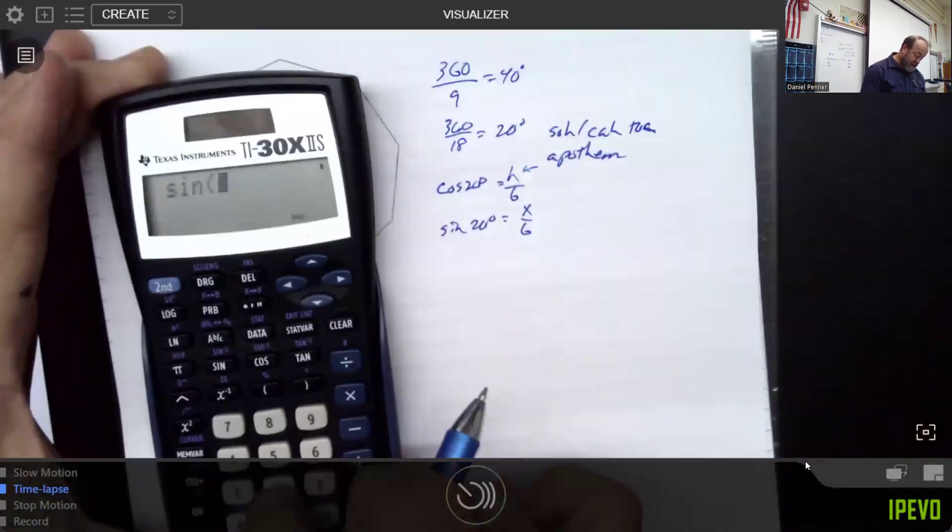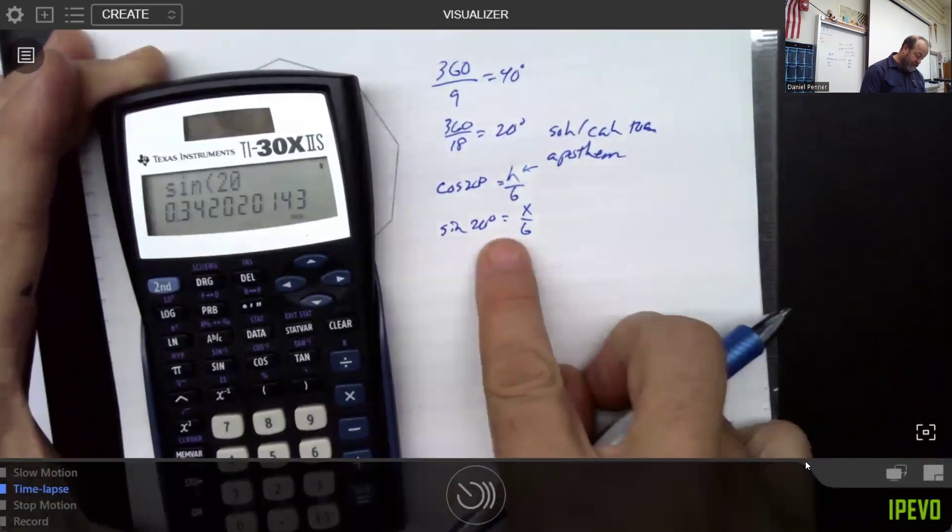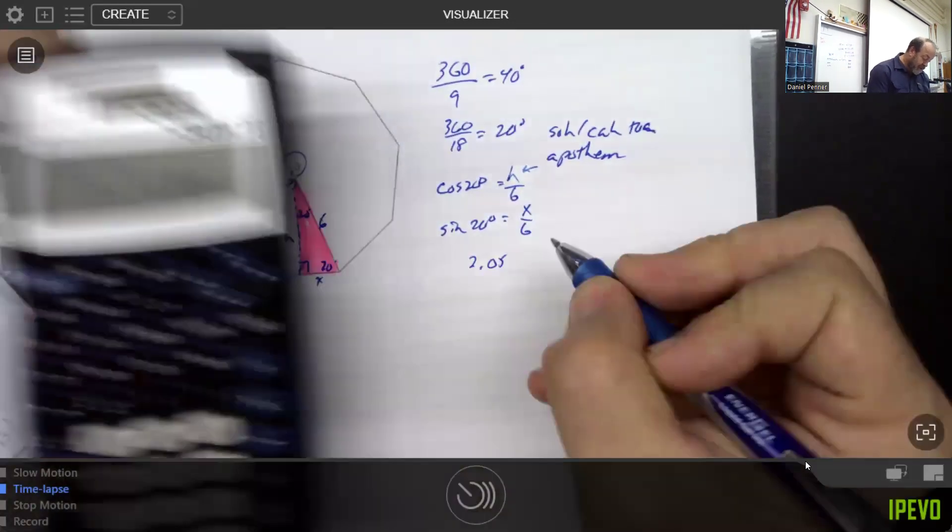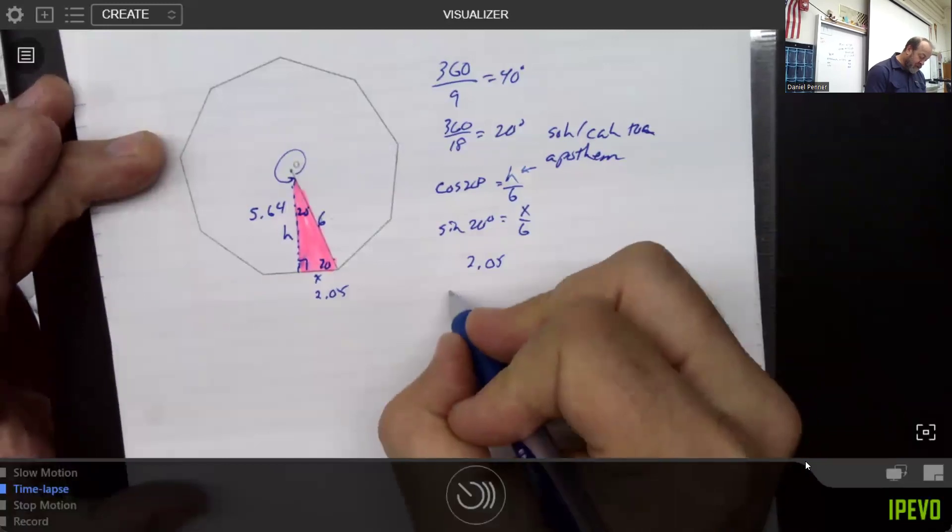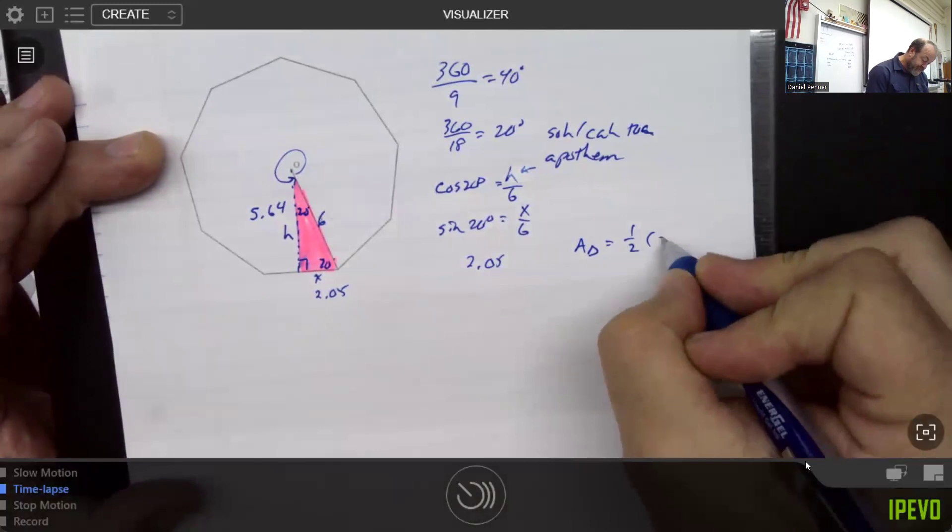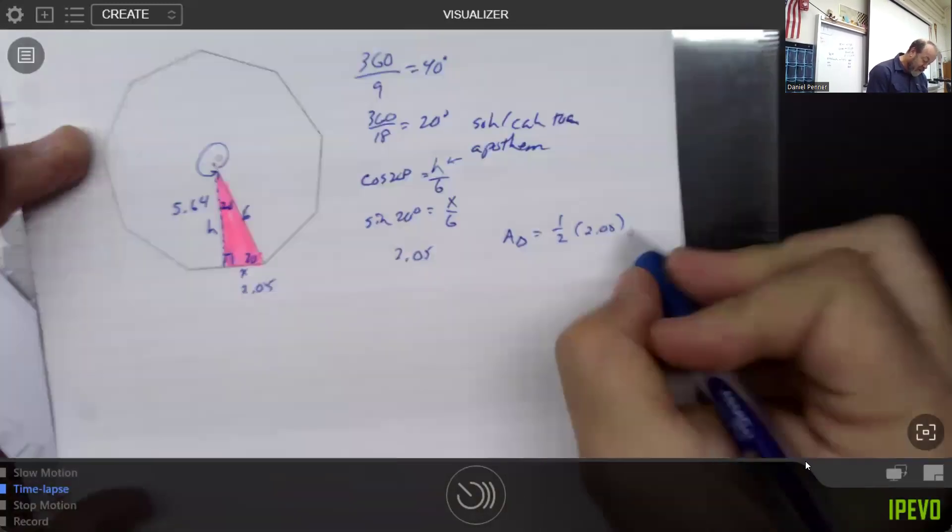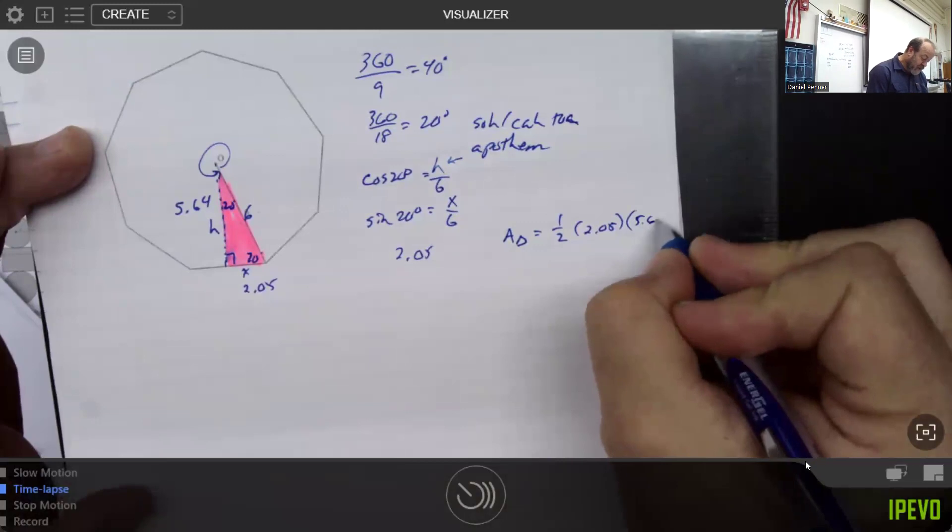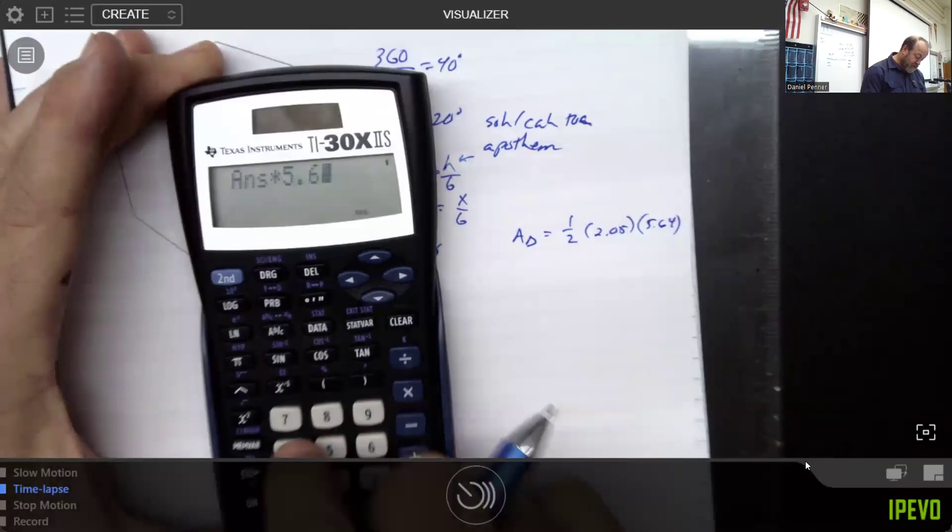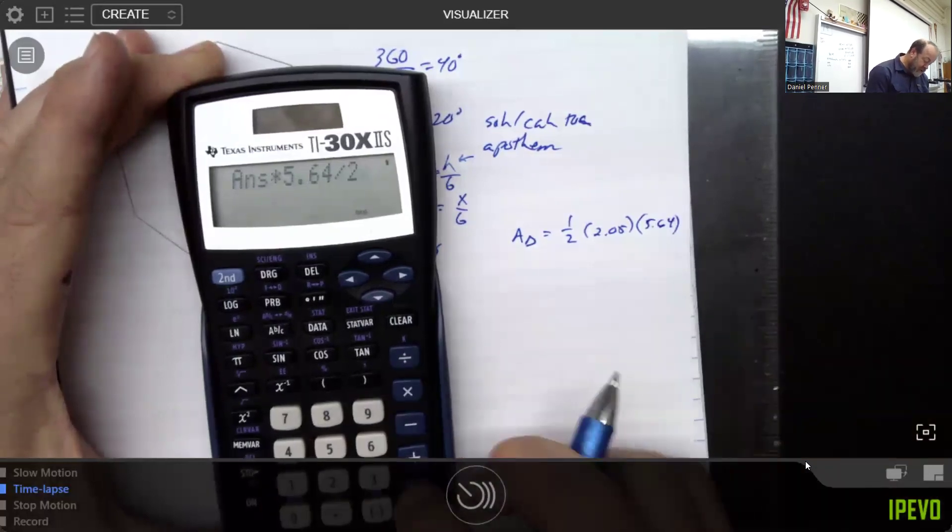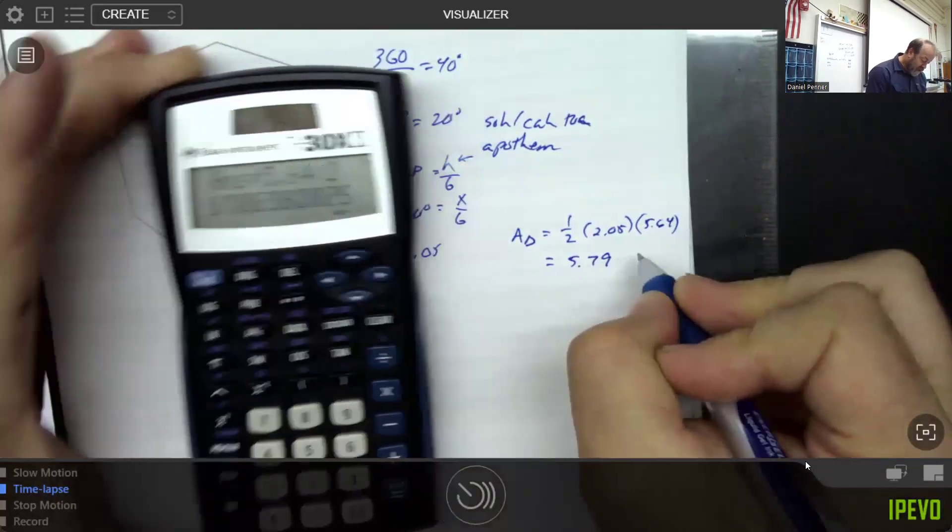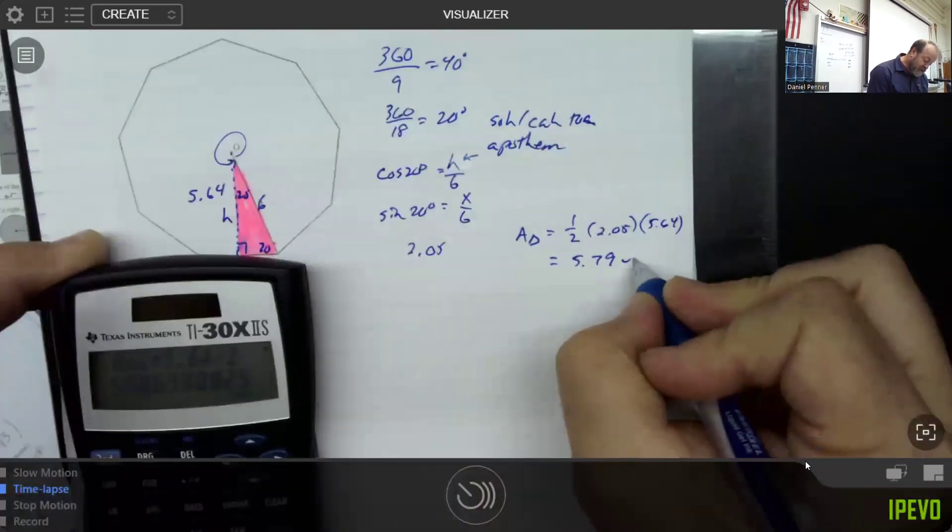So the sine of 20, again, is 0.34, and then if I cross multiply, I get 2.05. So that would be the base. And so, of course, all I need to do is find the area of the triangle, which is one half the base times the height. And so that would give me 2.05 times 5.64 divided by 2. It looks like that little triangle there is about 5.79 units squared.